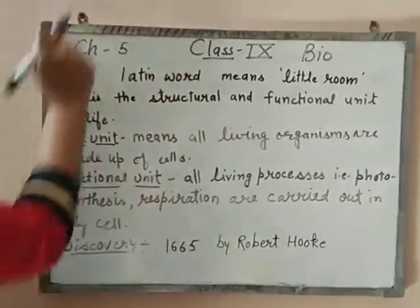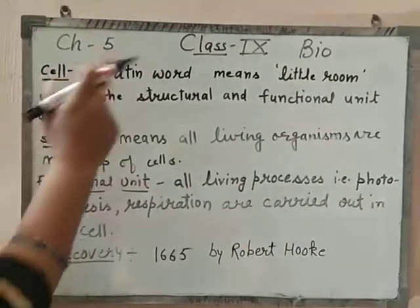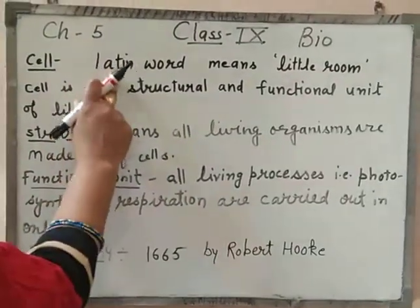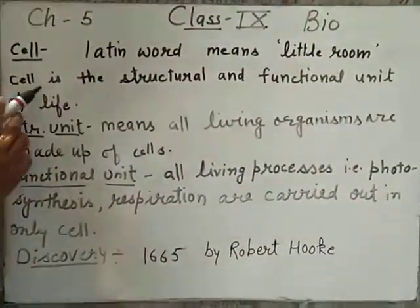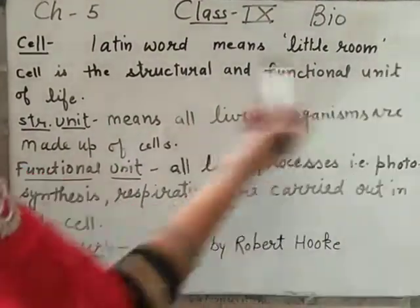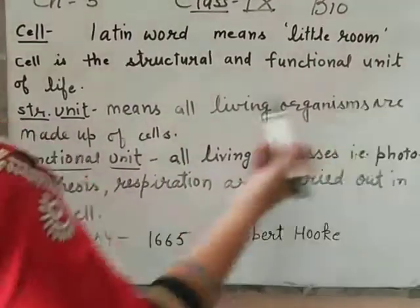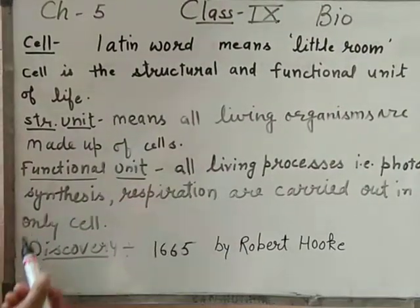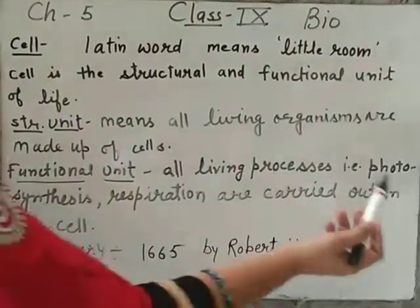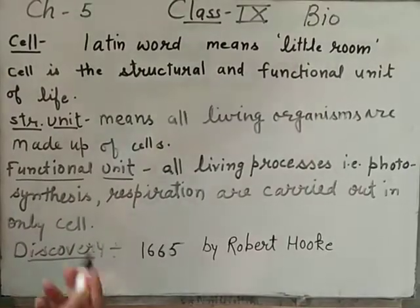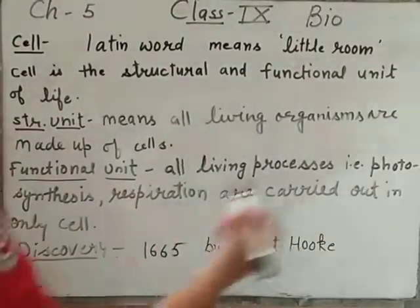The first term we have to understand is cell. Cell comes from the Latin language — it is a Latin word which means 'little room.' The definition of cell is: cell is the structural and functional unit of life. Structural unit means all living organisms are made up of cells. Functional unit means all living processes, like photosynthesis, respiration, and digestion, are carried out in the cell.